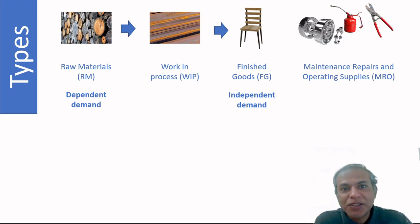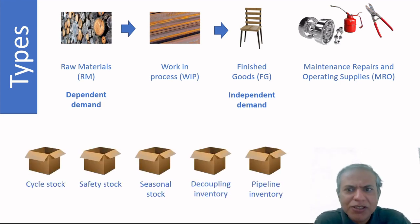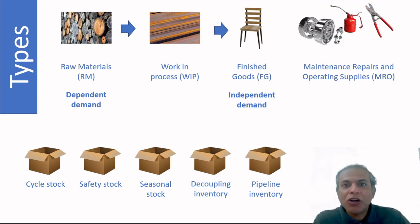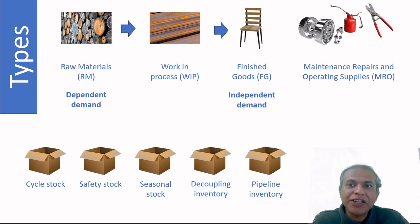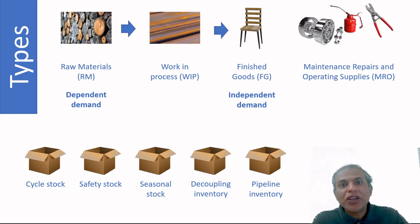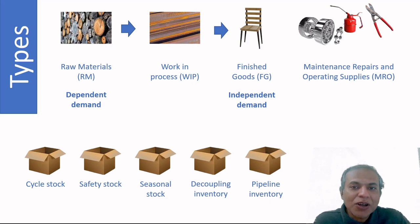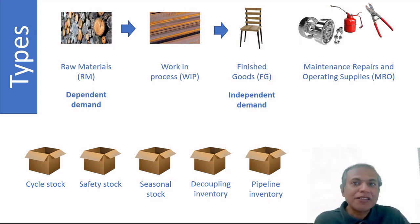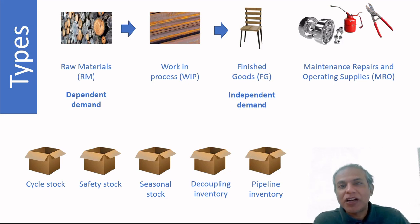There are additional classification types. Cycle stock is tied to process decisions — if a reactor always produces 2 tons, that becomes your cycle stock; if you order every 10 days, you must hold at least 10 days of stock. Safety stock is held for unknowns. In an ideal scenario, you should not be consuming safety stock regularly; if you are, it signals something unknown is happening that needs investigation.